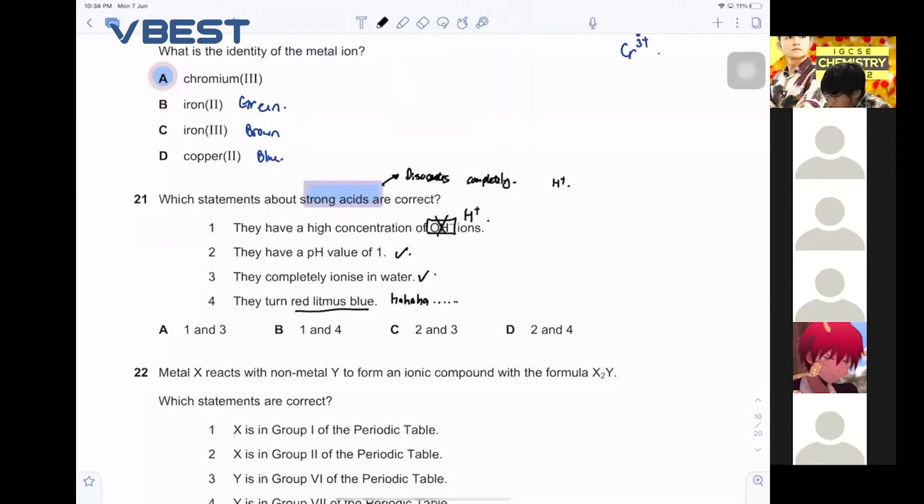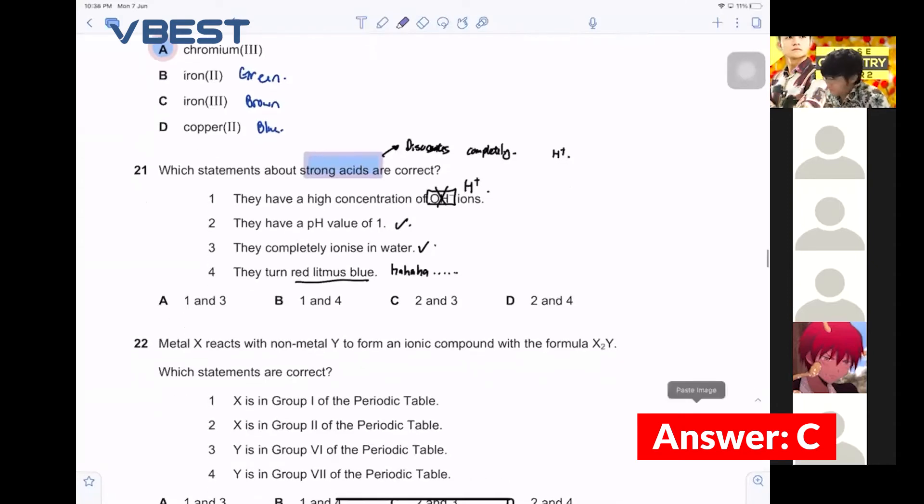But what if they have a pH value of 2? Are they still considered strong? Yes, they are considered strong. You are right. For example, HCl, your stomach acid in your stomach, is pH 2. It's still considered strong. Then how come 2 is correct? They have a pH value of 1. They could have a pH value of 1. So it's wrong.